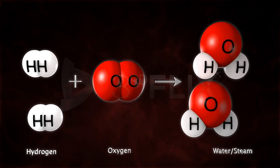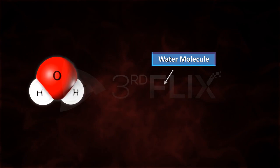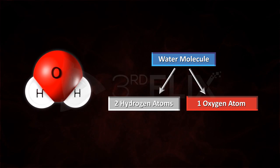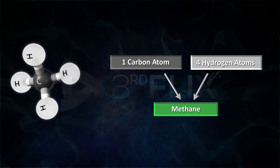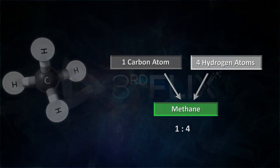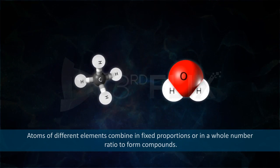Combination of atoms. Let's observe the formation of a compound from atoms. Hydrogen atoms combine with oxygen atoms to form water molecules. Each water molecule has two atoms of hydrogen and one atom of oxygen, so the ratio of combination is 2:1. Similarly, one atom of carbon combines with four atoms of hydrogen to form one molecule of methane, CH4, in a ratio of 1:4. Dalton concluded that atoms of different elements combine in fixed proportions or in a whole number ratio to form compounds.